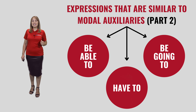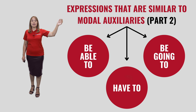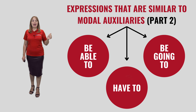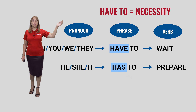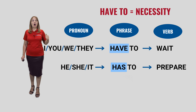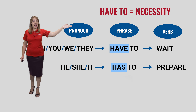We continue to talk about the modal auxiliaries, and today we'll pay special attention to the form HAVE TO. HAVE TO is used to express necessity. The statement consists of the subject, the phrase HAVE TO, and the verb.